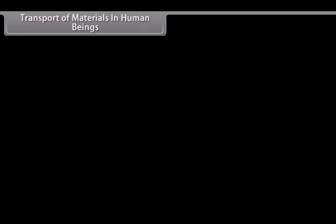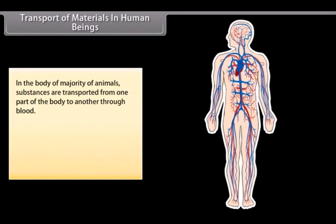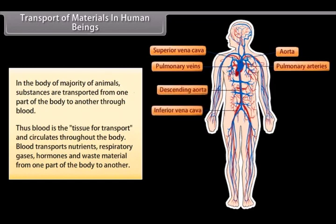Transport of Materials in Human Beings. In the body of majority of animals, substances are transported from one part of the body to another through blood. Thus, blood is the tissue of transport and circulates throughout the body. Blood transports nutrients, respiratory gases, hormones and waste material from one part of the body to another.